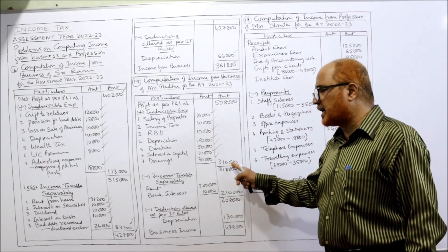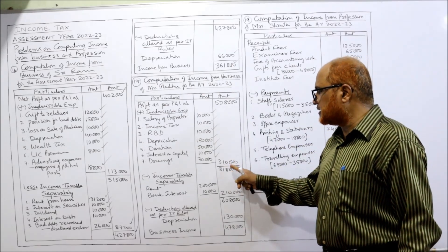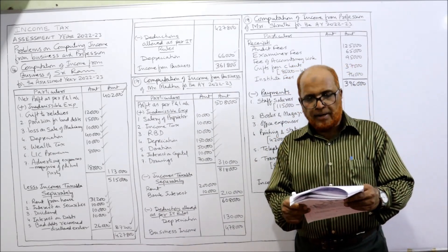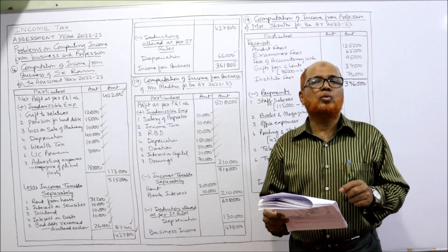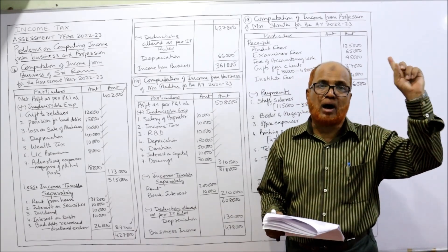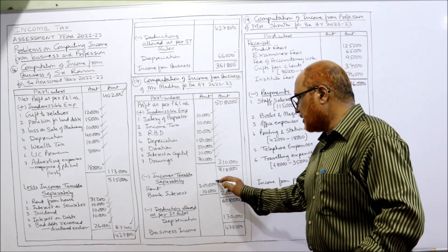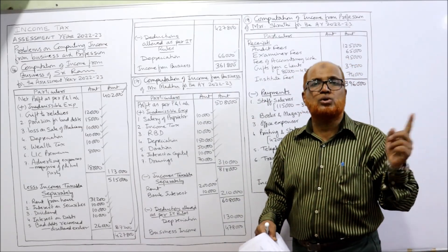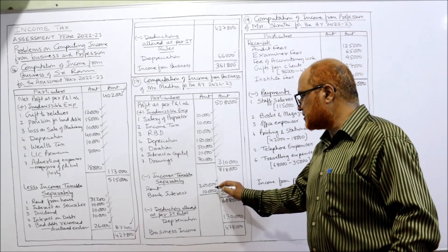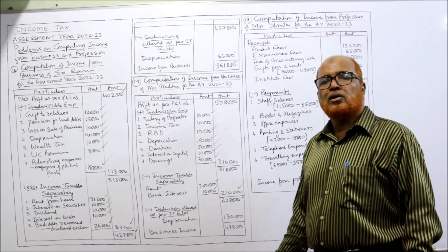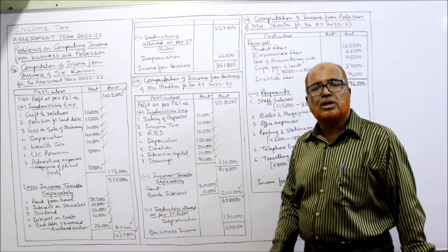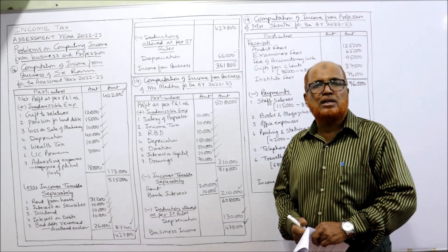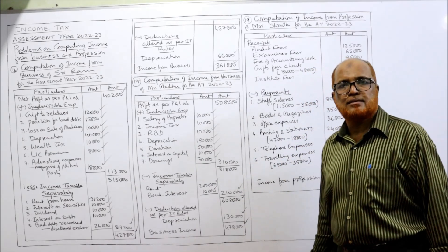The total inadmissible expenses are 3,10,000. Add to net profit: 5,08,000 plus 3,10,000 equals 8,18,000. From the credit side, rent of 2,00,000 is taxable under income from house property — deduct. Bank interest is taxable under income from other sources — deduct. Total deductions are 2,10,000. So 8,18,000 minus 2,10,000 equals 6,08,000. Depreciation allowed per IT rules is 1,30,000. Finally, 6,08,000 minus 1,30,000 equals 4,78,000 — the income from business.